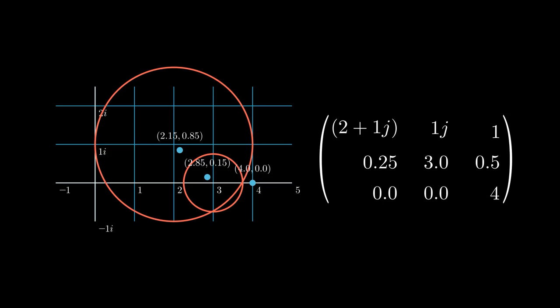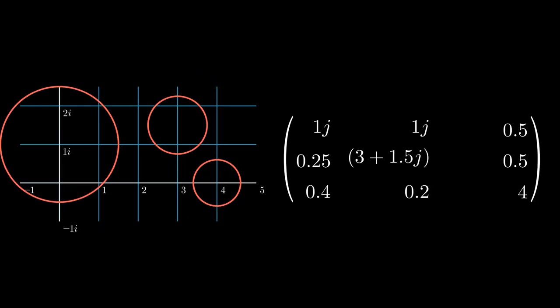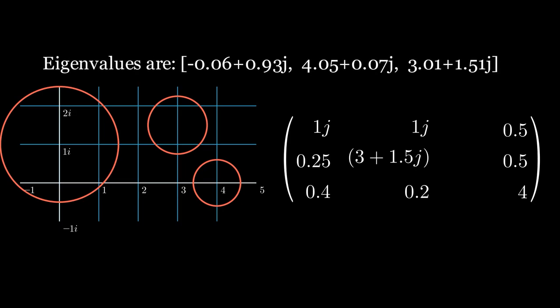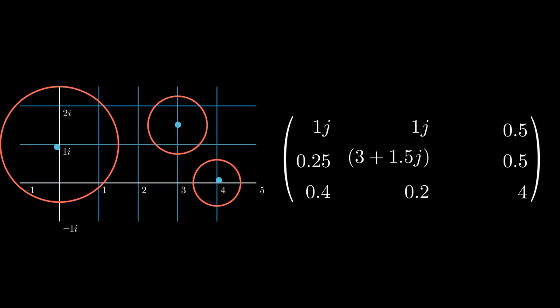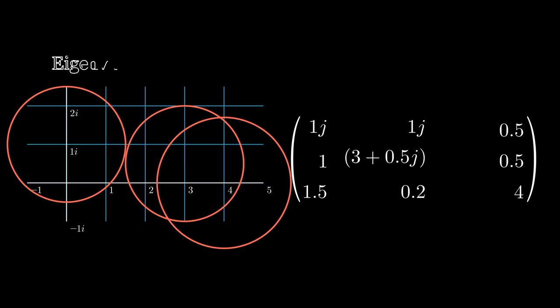Let's try another random matrix. Here is another random matrix that has three disjoint Gershgorin disks. Let's put the eigenvalues in. Hmm, interesting. They are still there. Let's try another one. And put the eigenvalues in. Still there.